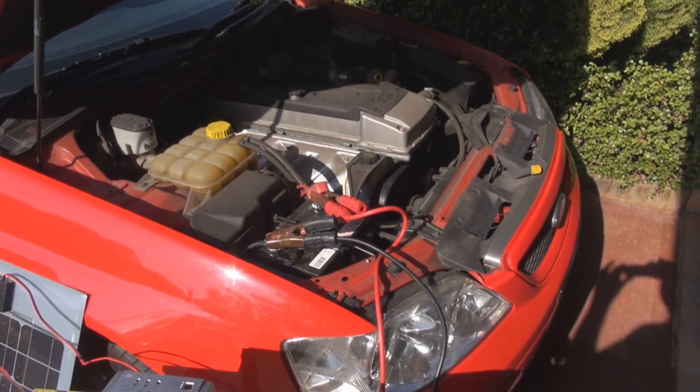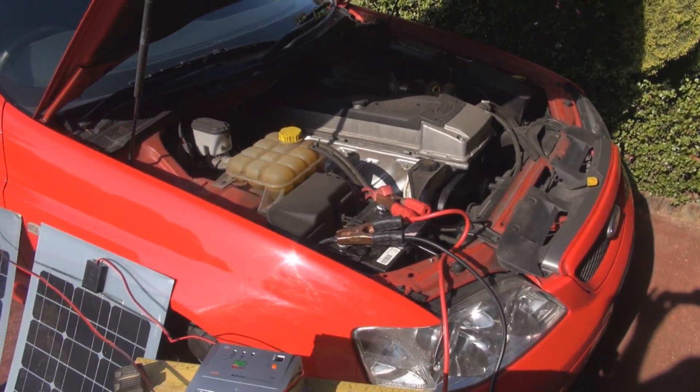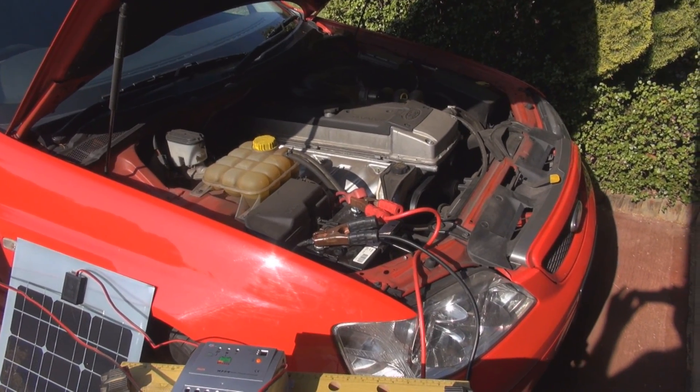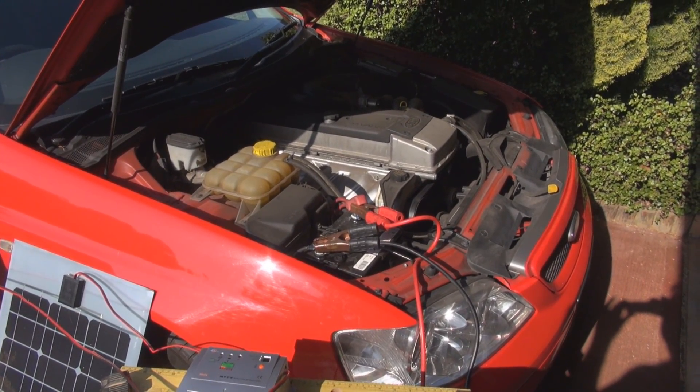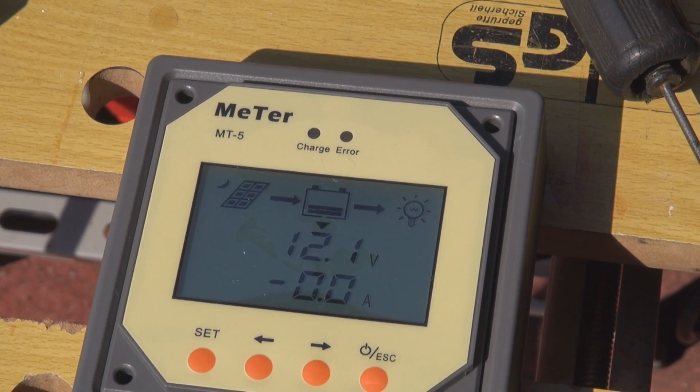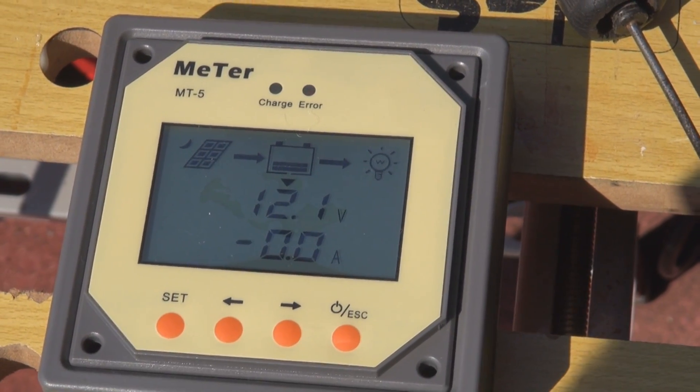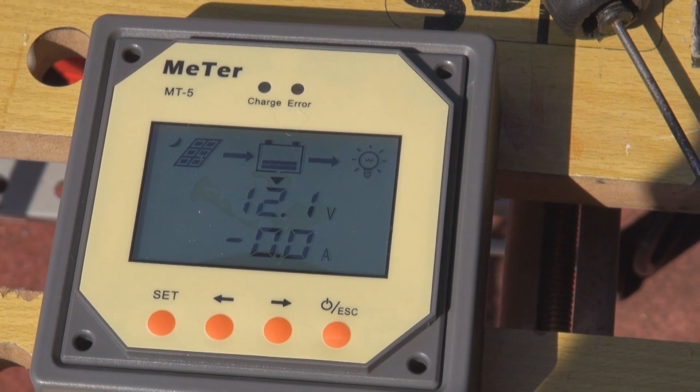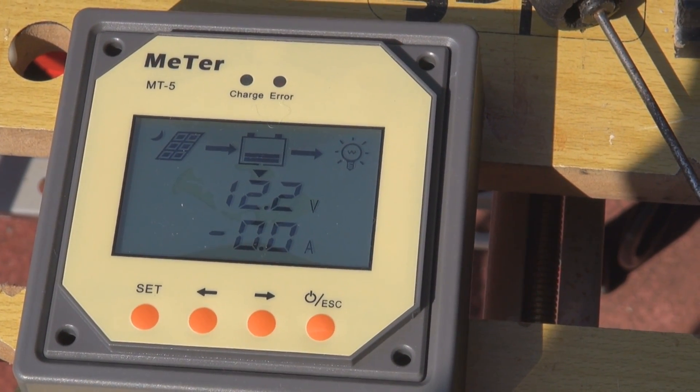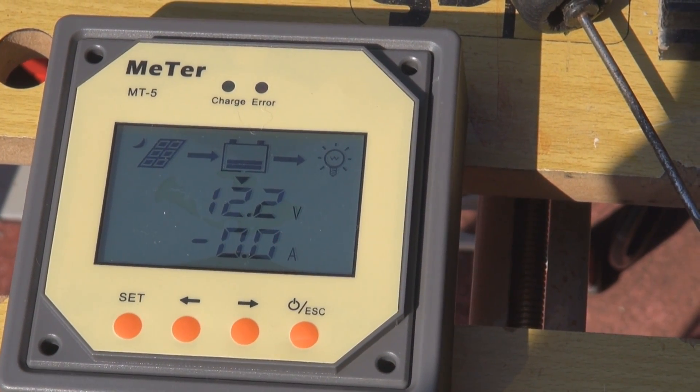The car has a fully charged battery, but I can switch the lights on and off to put a load on the battery. Now I'll put the headlights on, which puts the battery under load. It's pulling about 10 amps now, and you can see the voltage has gone down to 12.2 volts.